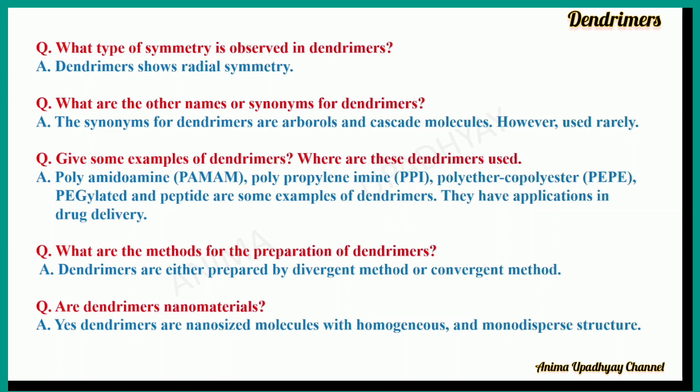Give some examples of dendrimers. Where are these dendrimers used? Polyamidoamine (PAMAM), polypropylene imine (PPI), polyether copolyester (PEPE), PEGylated and peptide dendrimers are some examples. And they have applications in drug delivery.